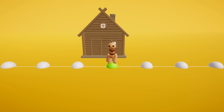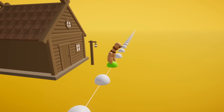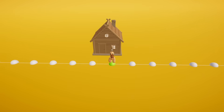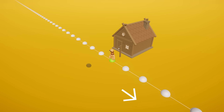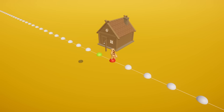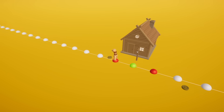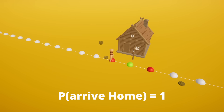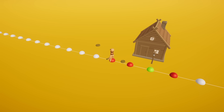Now imagine the town keeps going forever — a single road that stretches left and right without end. Our pawn stands at his house and flips a fair coin: heads he goes right, tails he goes left. Intuitively you might think there's a chance he walks off forever and never comes back. But here's a cool fact: in one dimension, he will come back home with probability 1. Eventually, he will stand on that doorstep again.